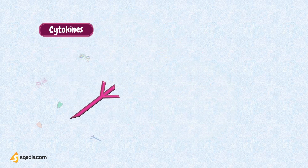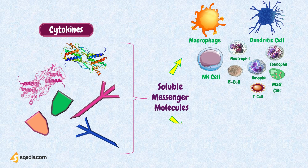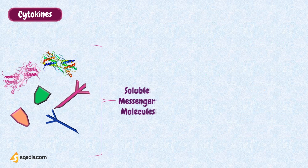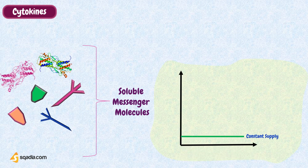Cytokines are soluble messenger molecules that are typically secreted by immune system cells. Non-immune cells, for example the epithelial cells, secrete some cytokines, including type I interferons and tumor necrosis factor. Most cytokines are only produced when cells become activated as part of the response to infection, while some are continuously secreted at low levels.